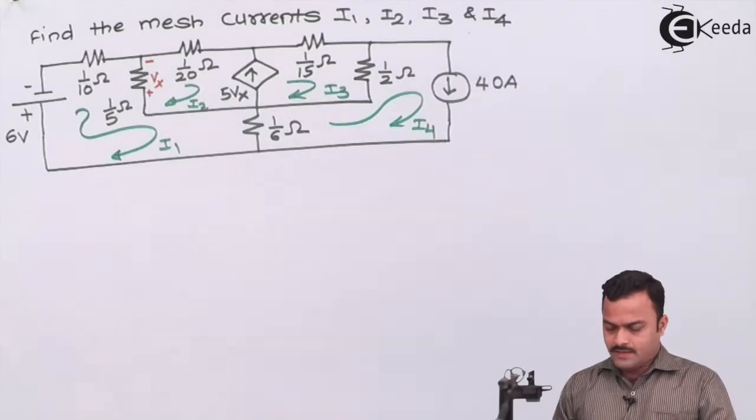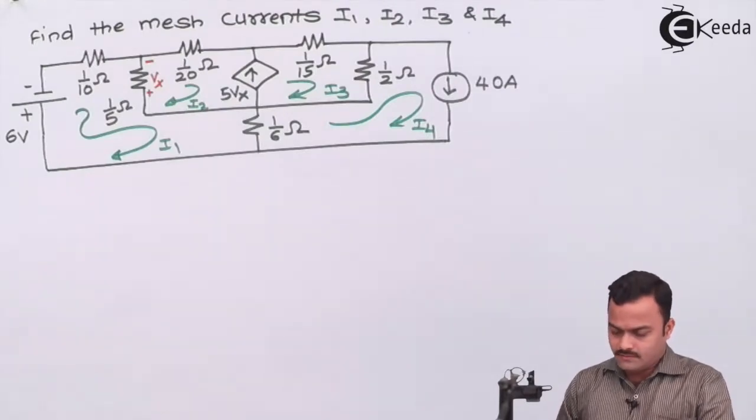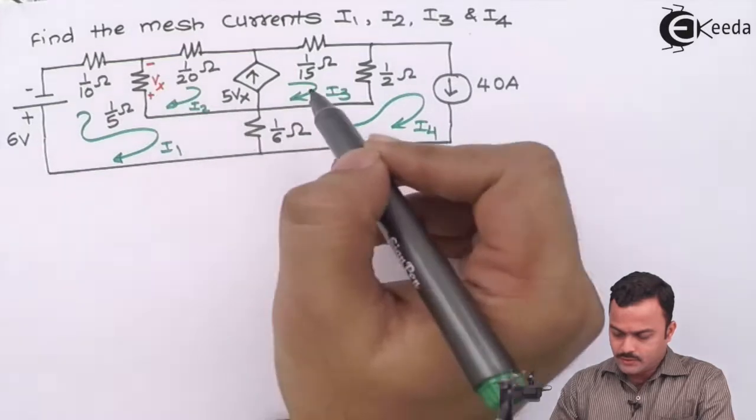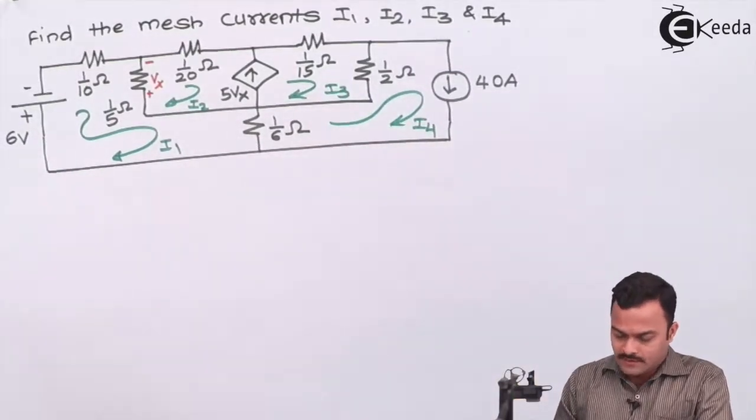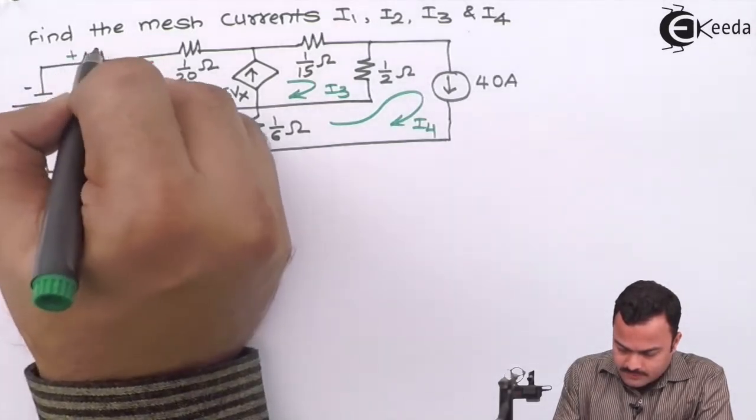Here is the problem where four meshes are given with mesh currents i1, i2, i3 and i4 and we are supposed to get all the four mesh currents. Let's mark the voltage drop based on the current through each resistor.